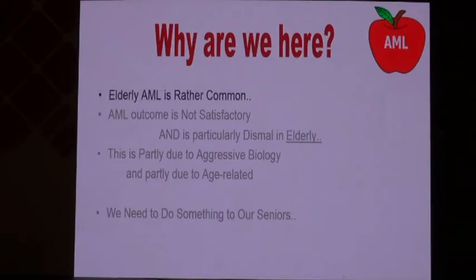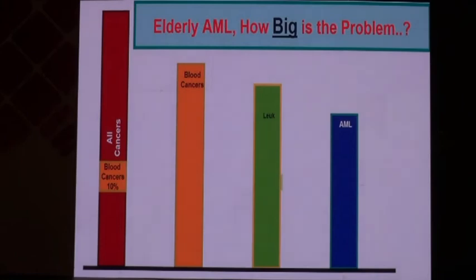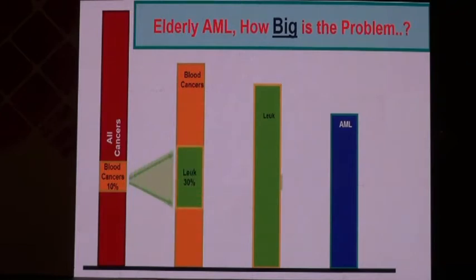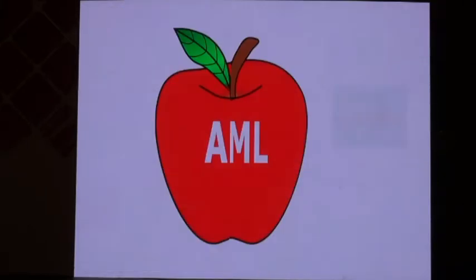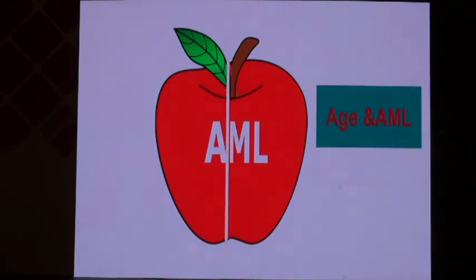Elderly AML is rather common. Blood cancers account for almost 10% of global cancers, and leukemia accounts for almost one-third of blood cancers. Acute myeloid leukemia accounts for almost a quarter of leukemias, and elderly AML accounts for almost 50% of that AML.